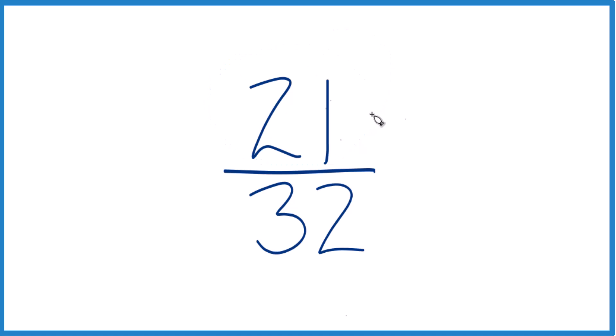To do that, we need to find a number that goes into 21, a whole number that goes evenly into 21 and into 32. But if you look at all the factors for each number here, you'll find that the only whole number that goes into both 21 and 32 is 1.